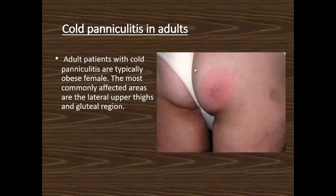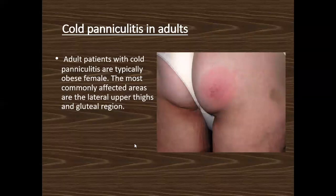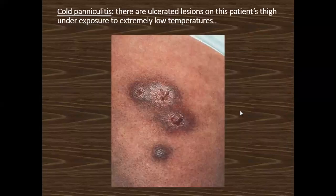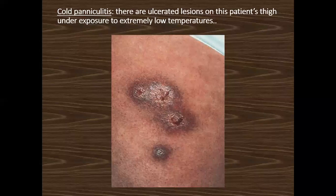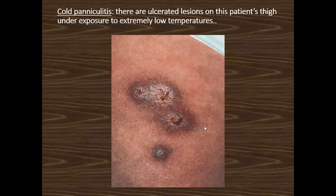In adults, cold paniculitis is mainly a disease of obese individuals, especially obese females, and the common site is the lateral aspect of the thigh and gluteal region. The onset is similar to infant cold paniculitis — erythematous indurated plaque — but soon there will be ulceration, which can later cause scars.